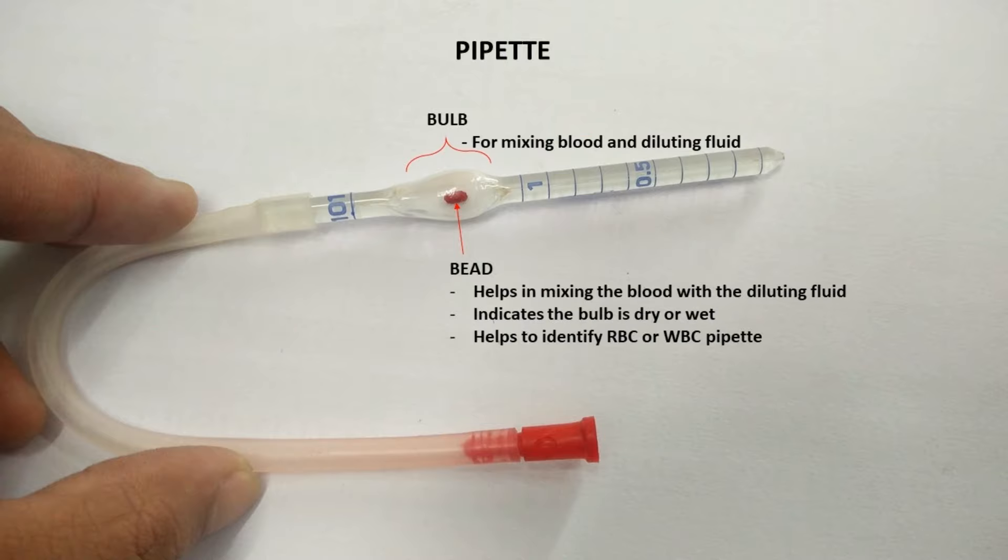What is the use of the bulb? The bulb is present for mixing blood and diluting fluid. What is the use of the bead? The bead helps in mixing the blood with diluting fluid, indicates whether the bulb is dry or wet, and helps to identify whether the pipet is an RBC pipet or WBC pipet.